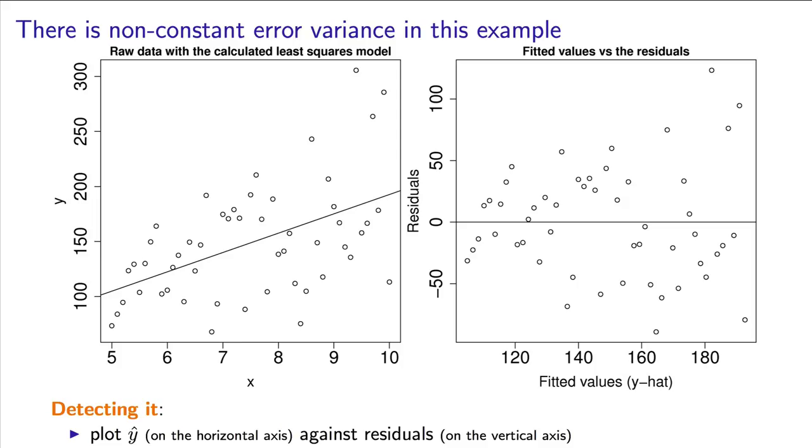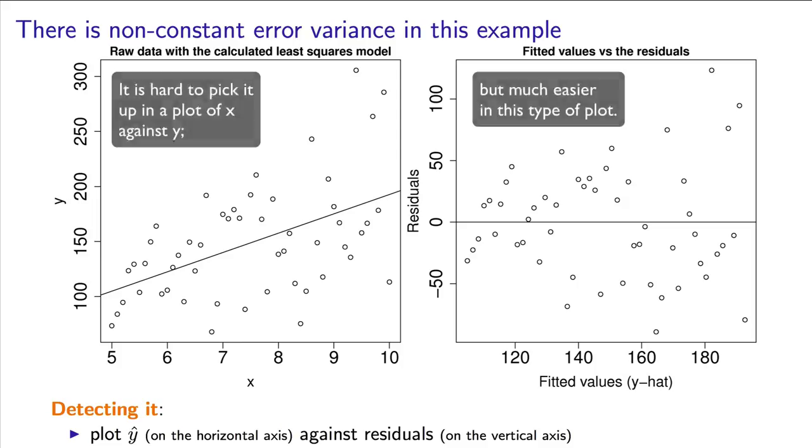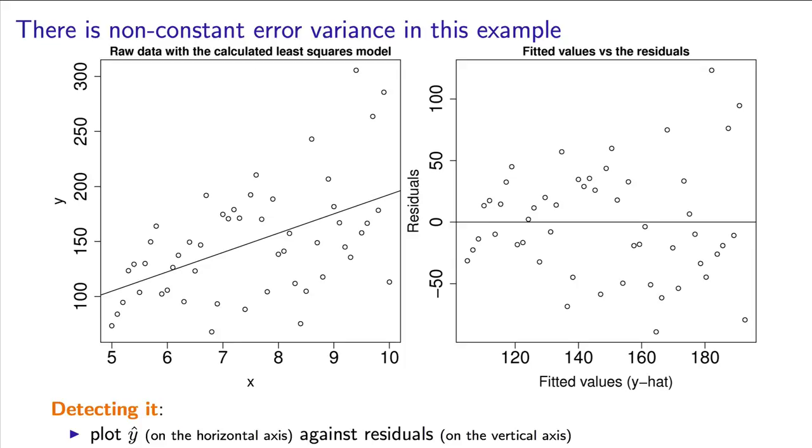The reason why we look for a fan shape in the residuals is because we expect the same variability at all levels of x, but if that variability increases, for example at high values of x, we will observe residuals as shown here on the right-hand side, where the spread of the residuals is much greater at higher values of the predicted value of y.